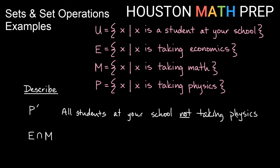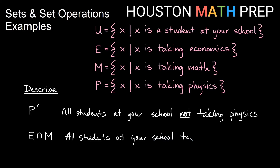Let's look at E intersect M. E is students at your school taking economics; M is students taking math. The intersection says they need to be in both lists. So this will be the set of all students at your school taking both economics and math.